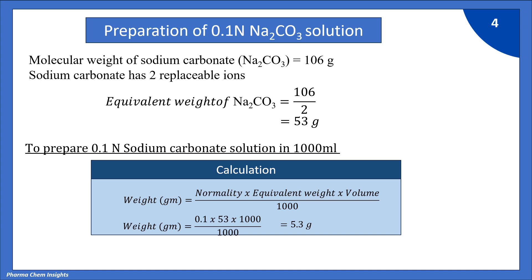By putting the values: normality is 0.1, equivalent weight is 53, volume to be prepared is 1000 divided by 1000. By calculating, we get 5.3 g. Hence, 5.3 g of sodium carbonate dissolved in 1000 ml of water gives 0.1 normal sodium carbonate solution.